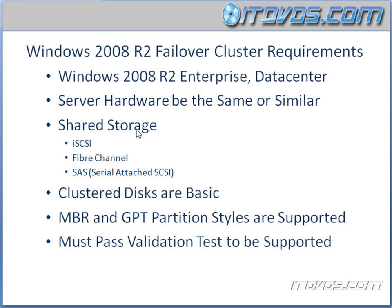Our shared storage needs to be iSCSI, Fibre Channel, or Serial Attached SCSI. Parallel SCSI is no longer supported. Also, our clustered disks need to be basic disks, so dynamic disks are not supported for your clustered storage. Now, for the storage that's on your server on each node, that can be a dynamic disk — that's fine. This is just your clustered disks.